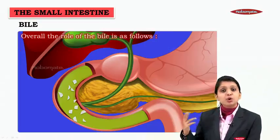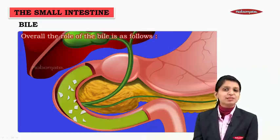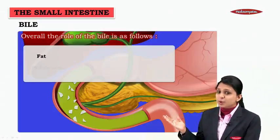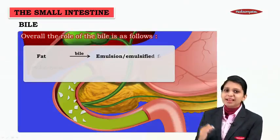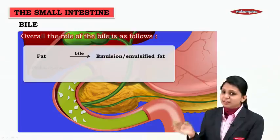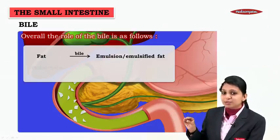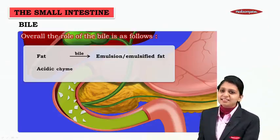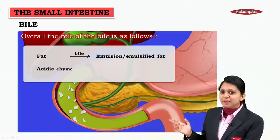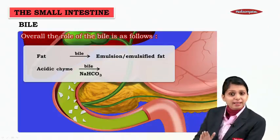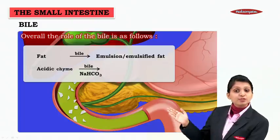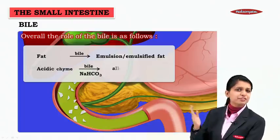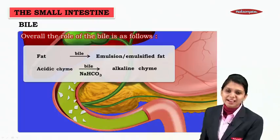Overall, the role of bile juice: fats acted upon by bile are converted into tiny droplets — emulsified fat. And the acidic chyme, due to the presence of sodium bicarbonate in the bile, is converted to an alkaline chyme.